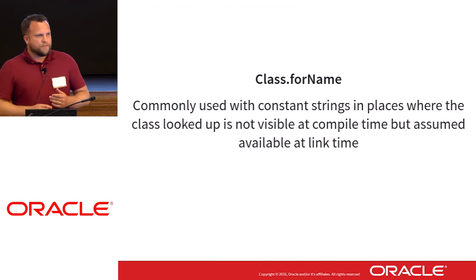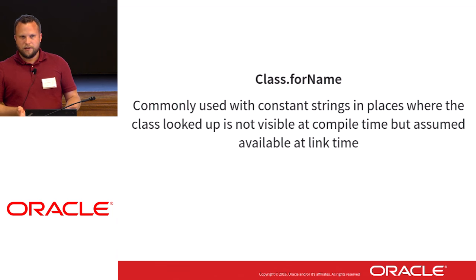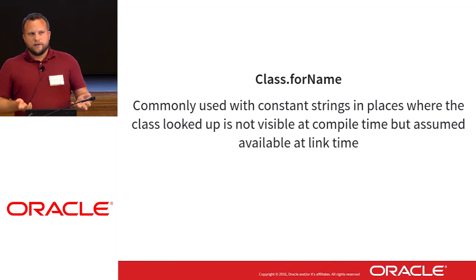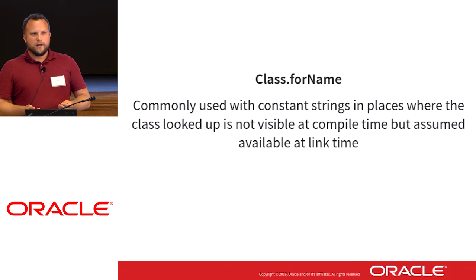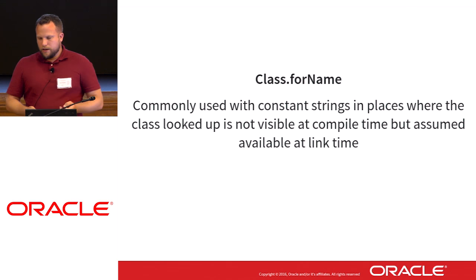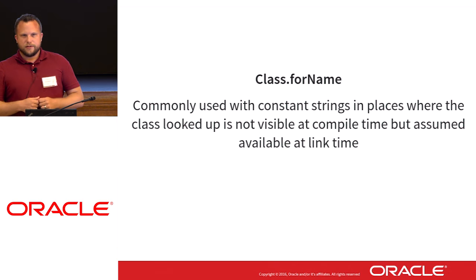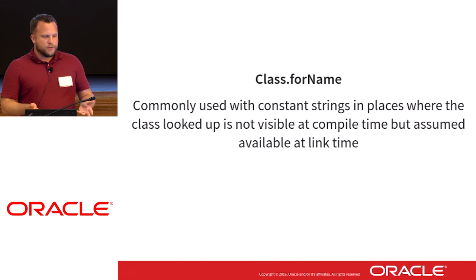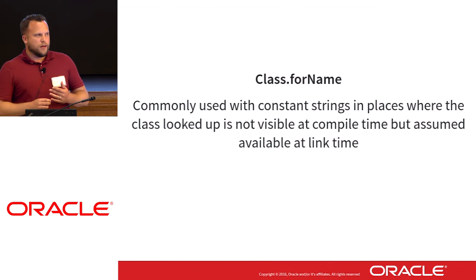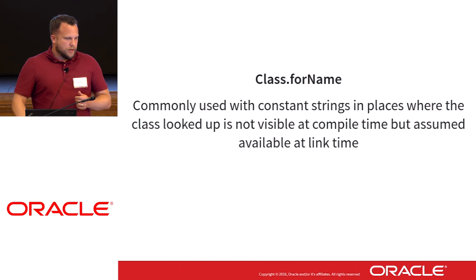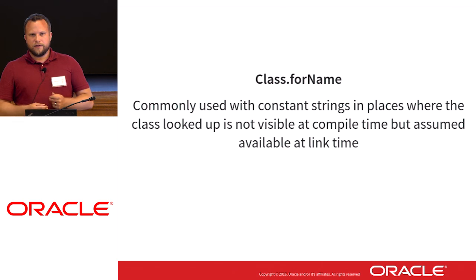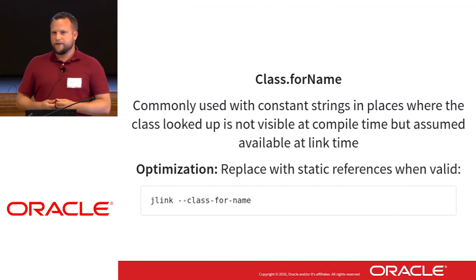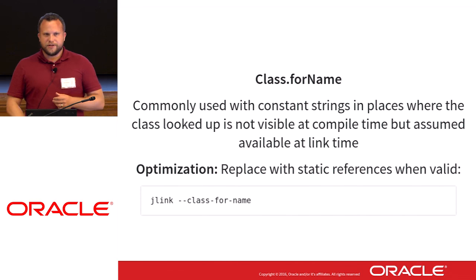A typical link-time classical example would be something you are referring to — a class, for example — at compile time that you want to load, but it's not available at compile time for some reason. This then requires the use of Class.forName, which everyone here is likely familiar with, to do the dynamic lookup or dynamic linkage of the classes. This provides an opportunity when linking together: if the class you're referring to is statically known at link time, you can replace dynamic with static references when that transformation is valid.